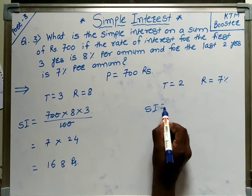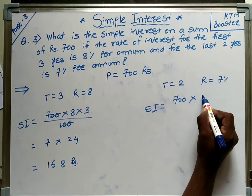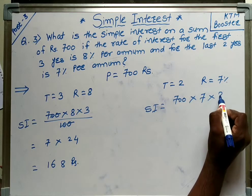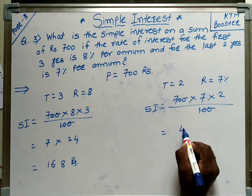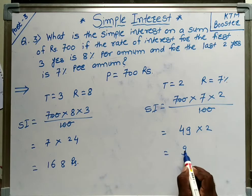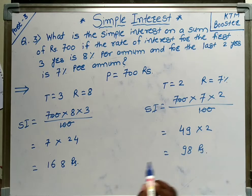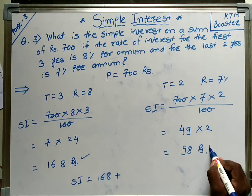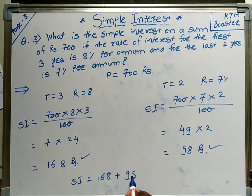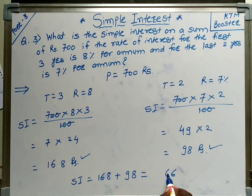For the last 2 years, SI equals P into R into T upon 100. P is 700, R is 7, T is 2, divided by 100. The 100 and 700 cancel partially: 7 into 7 is 49 into 2, that is 98 rupees. So the total simple interest is 168 plus 98 equals 266 rupees.